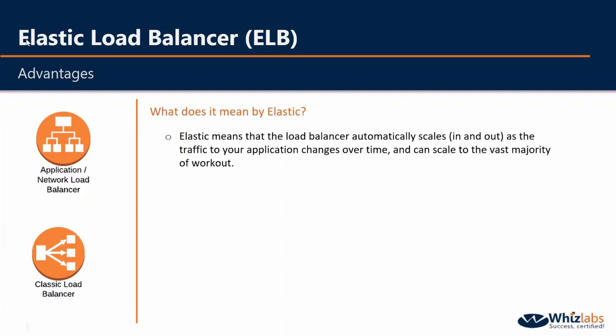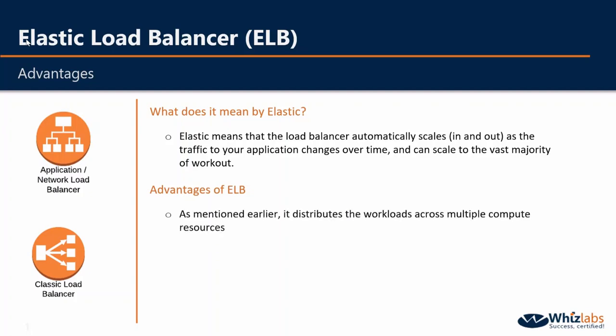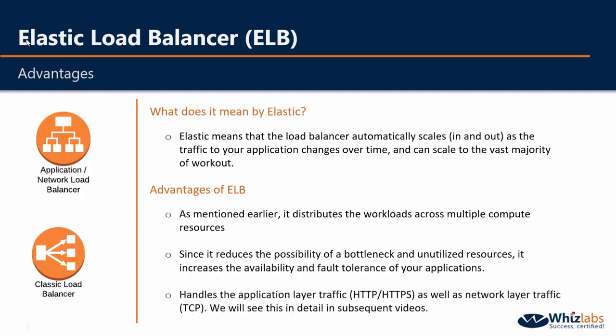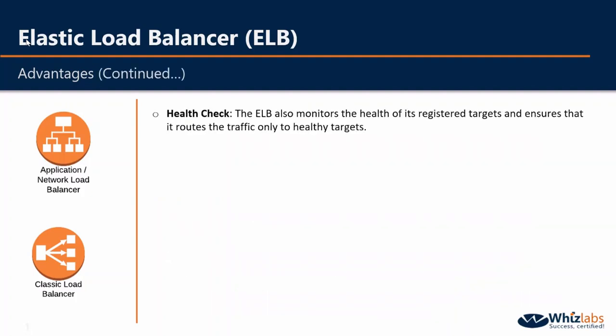Let us see some of the advantages of using Elastic Load Balancer. It distributes the workloads across multiple compute resources such as EC2 instances, IP addresses, or containers. Since it removes the possibility of a bottleneck or any unutilized resources, it increases the availability and fault tolerance of your applications. It handles application layer traffic such as HTTP or HTTPS, as well as network layer traffic that is TCP or Transmission Control Protocol. It also provides health checks for target resources — the load balancer monitors the health of its registered targets and ensures that it routes traffic only to the healthy targets.